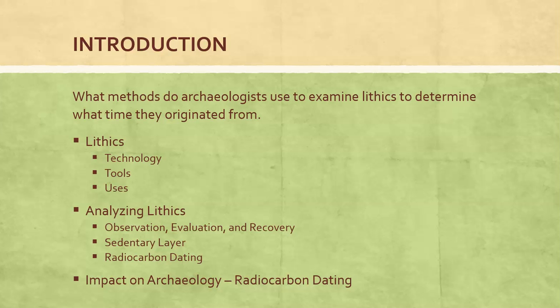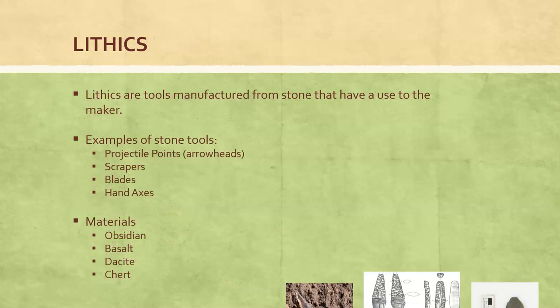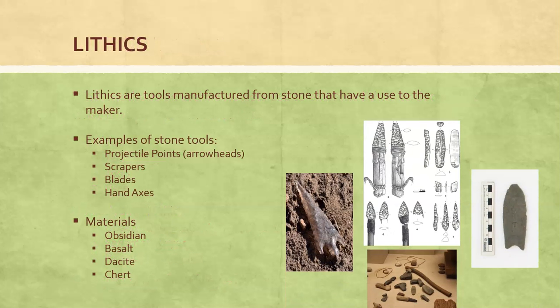We'll discuss the sedimentary layer and radiocarbon dating, and then in conclusion we'll discuss the impact on archaeology that radiocarbon dating has had. Lithics are tools manufactured from stone that have a use to the maker. Examples of stone tools are projectile points — also known as arrowheads and Clovis heads — scrapers, blades, and axes, just to name a few.